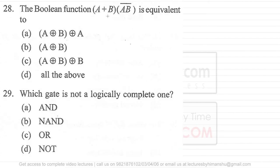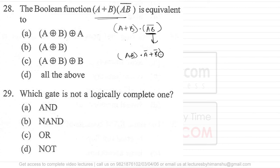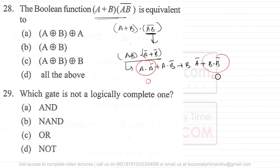Question 28 asks which boolean function is equivalent to (A + B)·(AB)'. Applying De Morgan's law: (AB)' = A' + B', so the expression becomes (A + B)·(A' + B'). Expanding: A·A' + A·B' + B·A' + B·B'. Since A·A' = 0 and B·B' = 0, we are left with AB' + BA', which equals A XOR B. Therefore option B is correct.